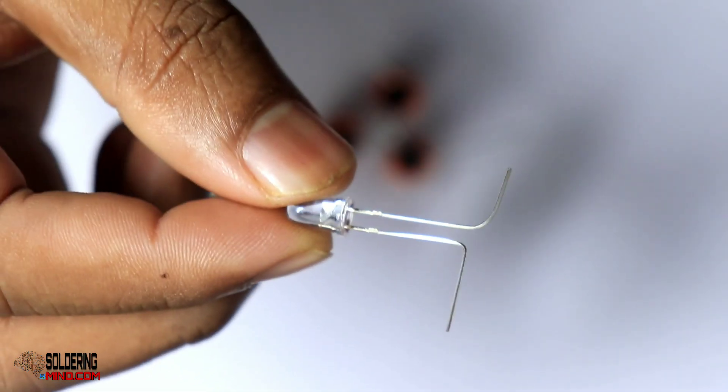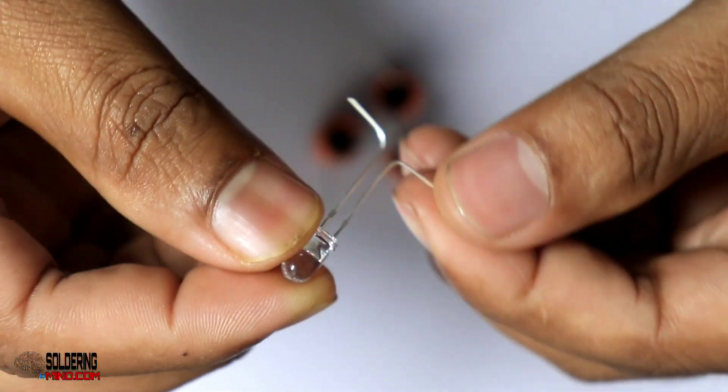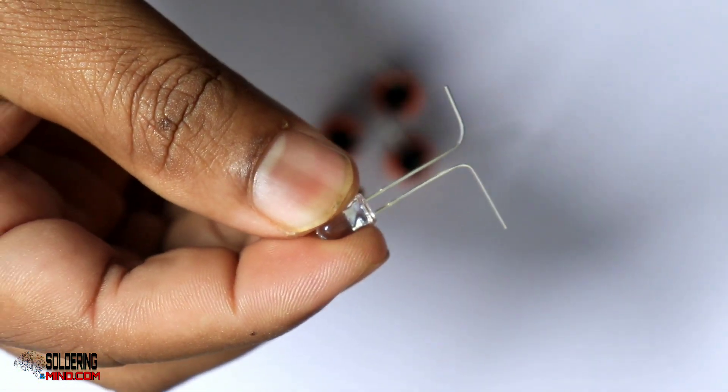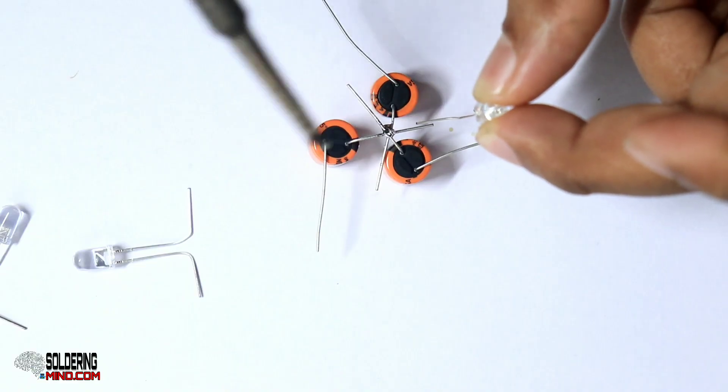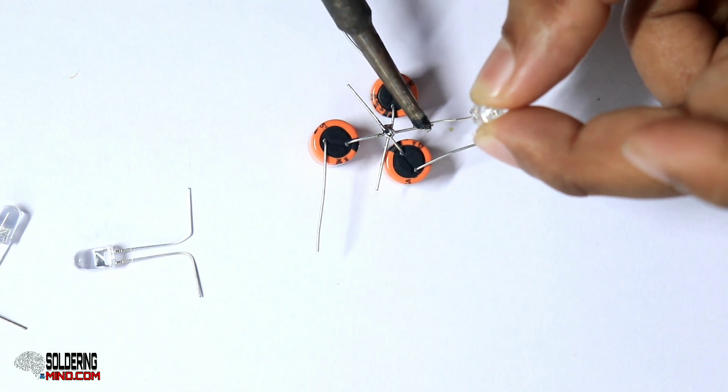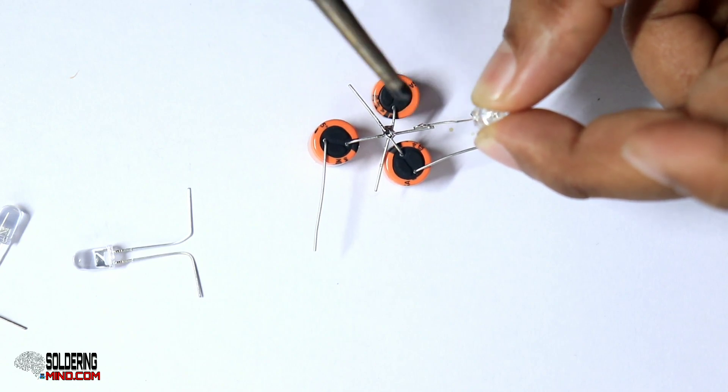Take three different colors of LED lights and bend the legs. Connect LED negative polarity to the capacitor's negative connection.